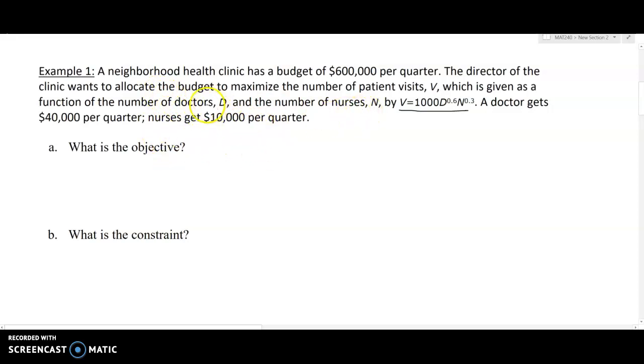Our objective here is evident: maximize the number of patient visits. We want to present this mathematically. What do we want to maximize? We want to maximize the output of this function which I'll write as V(D, N) = 1000D^0.6 N^0.3.